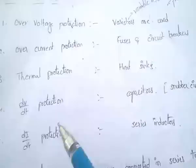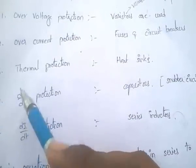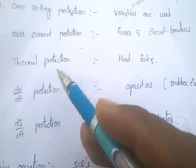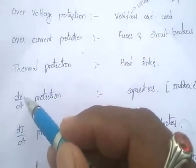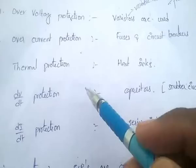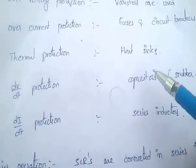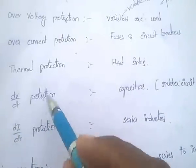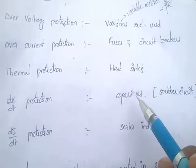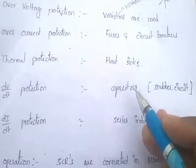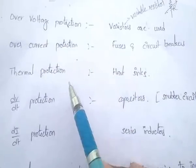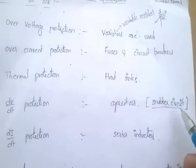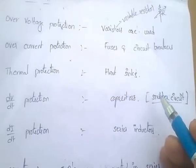For dv/dt protection, capacitors are used. At a very small time the voltage becomes very high, and since capacitors do not allow sudden change in voltage, they are used for dv/dt protection. The circuit with capacitors used for dv/dt protection is called the snubber circuit — very important.